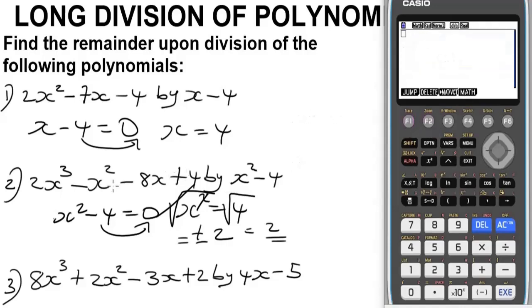Now let's delete everything here. Let's input the polynomial we have: 2x³ - x² - 8x + 4. It's as simple as that. Let's press EXE to get our result of value zero. That means the remainder is zero for question two.